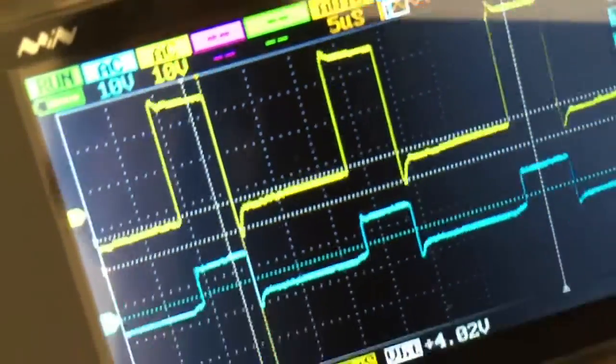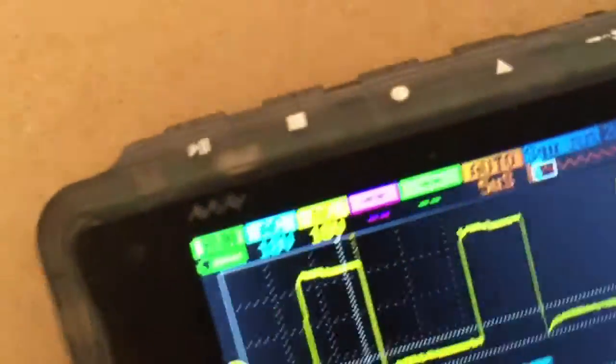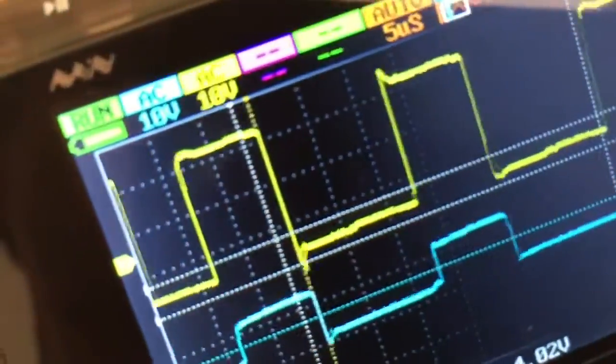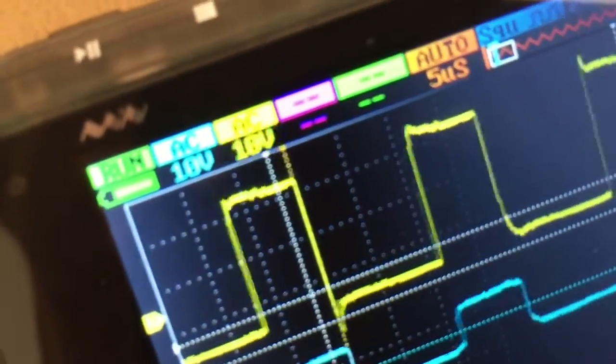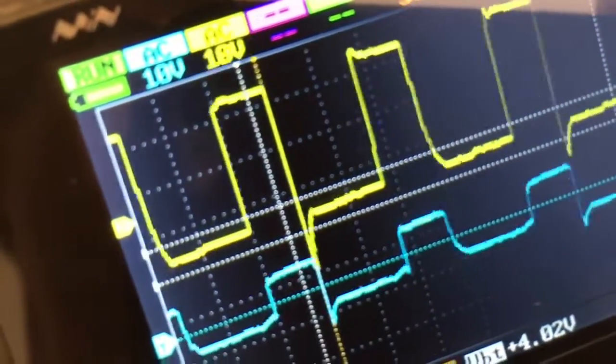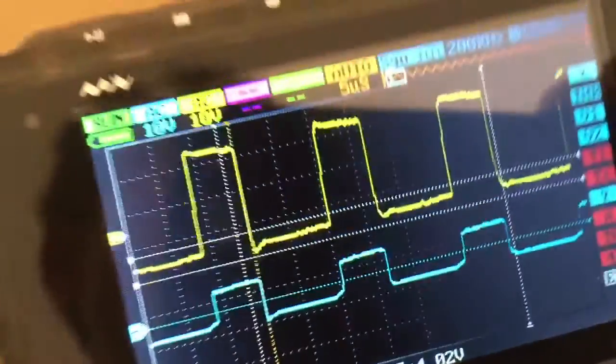So let's try playing with the settings. Here I'm varying the pulse width, and here I can vary the frequency, as you can see. So it seems to be working pretty well, and I've got a good output off my gate drive transformer - a good square wave.